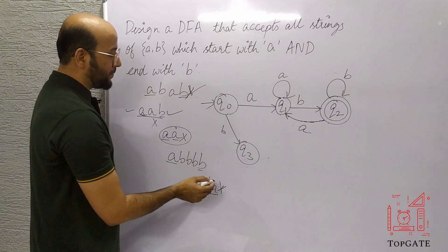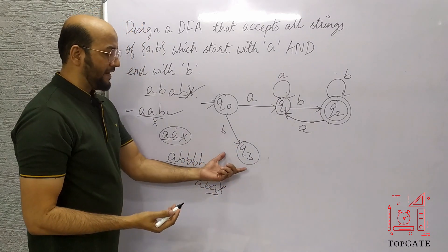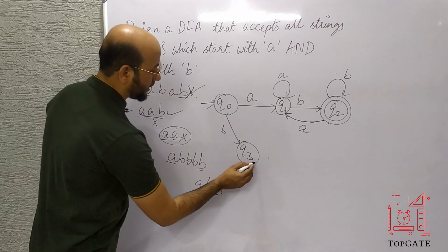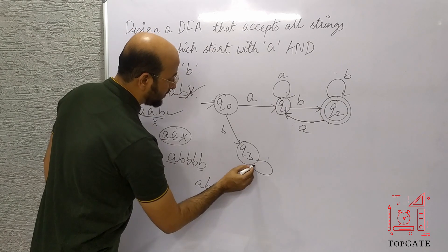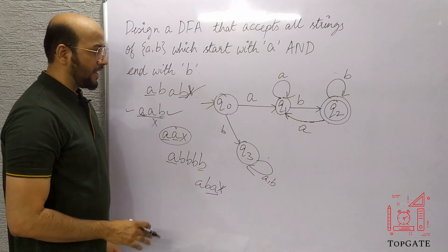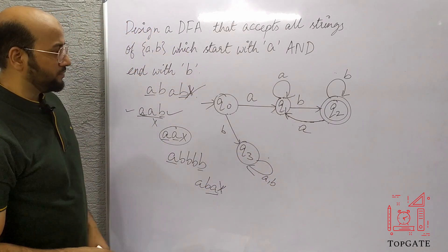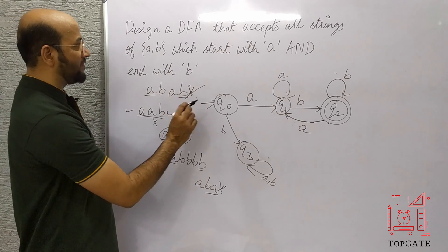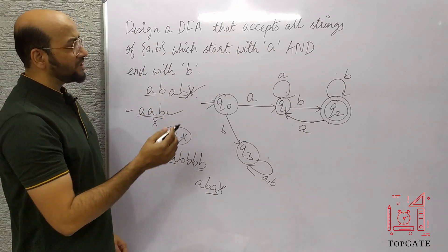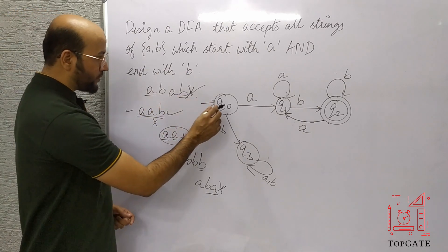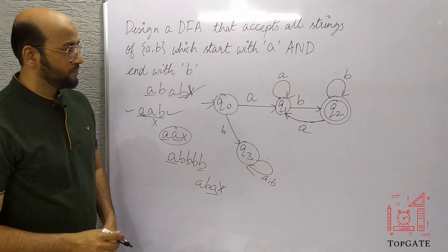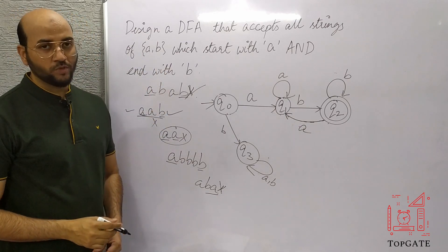Now come to Q3, which is a dead state. There is no issue here — I will simply add a self-loop for both A and B. And we are done. So this is our DFA for accepting all strings of A and B that start with A and end with B. Thank you so much.